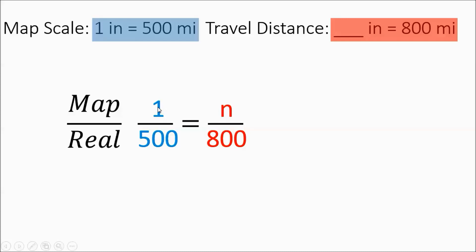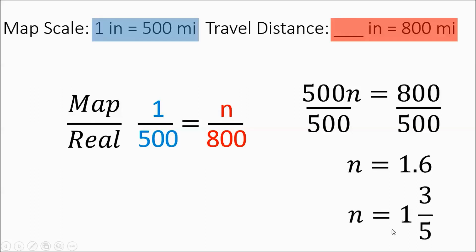800 times 1 divided by 500, or you can set up a cross product. 500n equals 1 times 800, divide out the 500, you get this, 1.6. You might see it as 1 and 3 fifths. If you're taking like a multiple choice test, you need to be comfortable knowing that 0.6 is the same as 3 fifths. So it could be either one. And that is about it. I hope this helps. Best of luck to you.